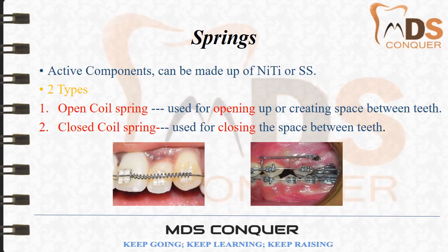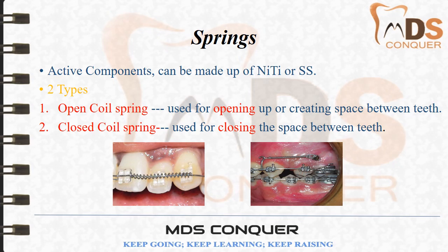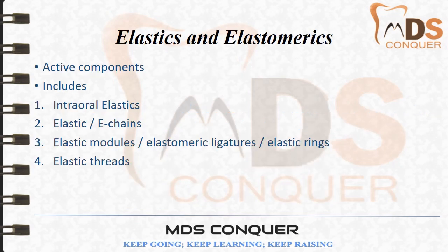Springs are active components made up of nickel titanium or stainless steel. The two basic types are open coil springs and closed coil springs. An open coil spring is compressed between two teeth to open up or create space. The closed coil spring is used to close extraction space or interdental space — it is stretched between two points such as a micro-implant and a hook.